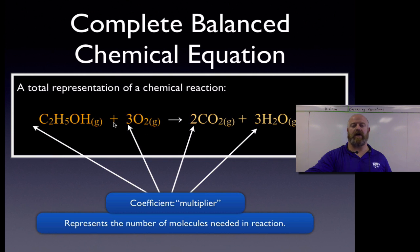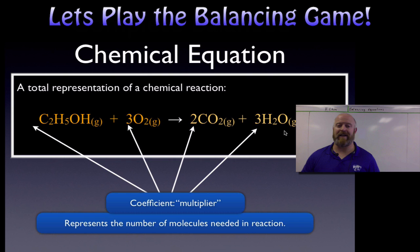We have one oxygen here, plus three times two for seven total oxygens on this side. On this side, we have two times two for four, plus three times one for three more. So when we break this down, here's how I like to do it.